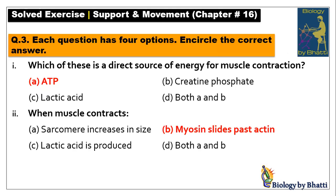MCQs, question number one: which of these is a direct source of energy for muscle contraction? The answer is ATP. Creatine phosphate is a secondary source. Number two: when muscle contracts, myosin slides past actin. The other options are wrong; the correct answer is option B.